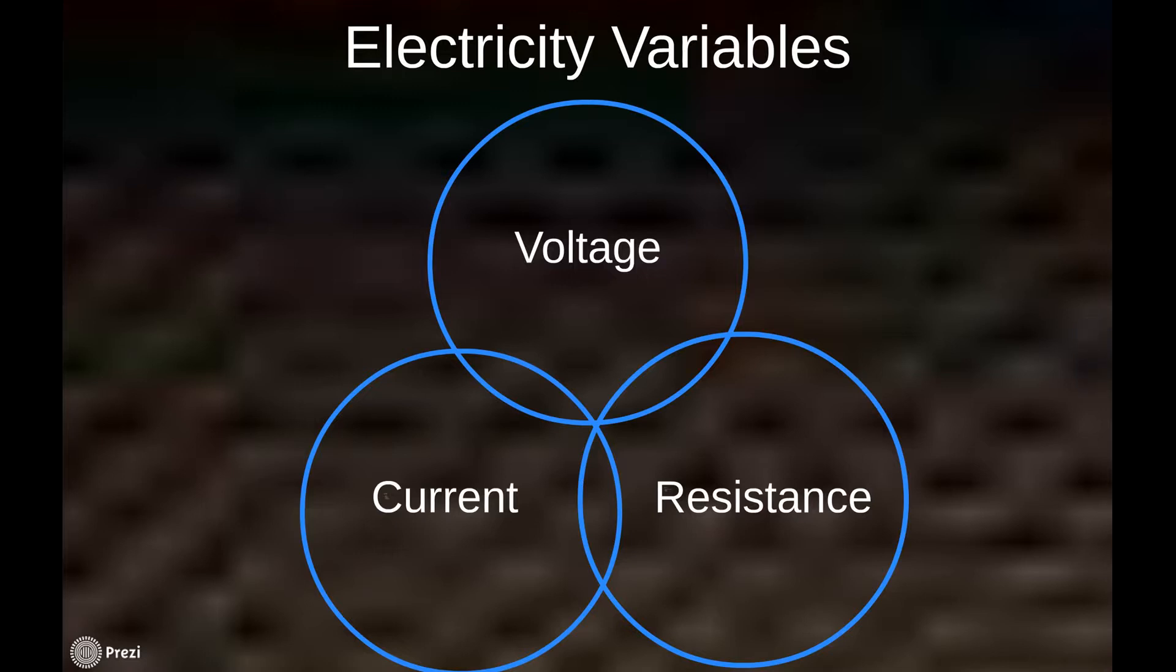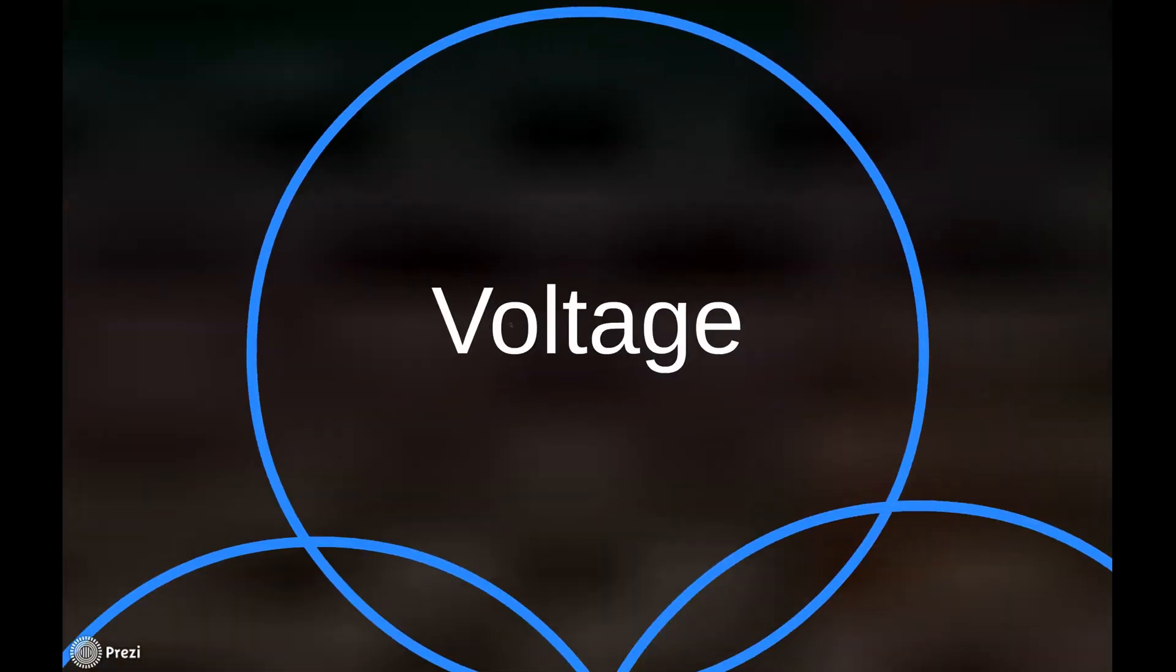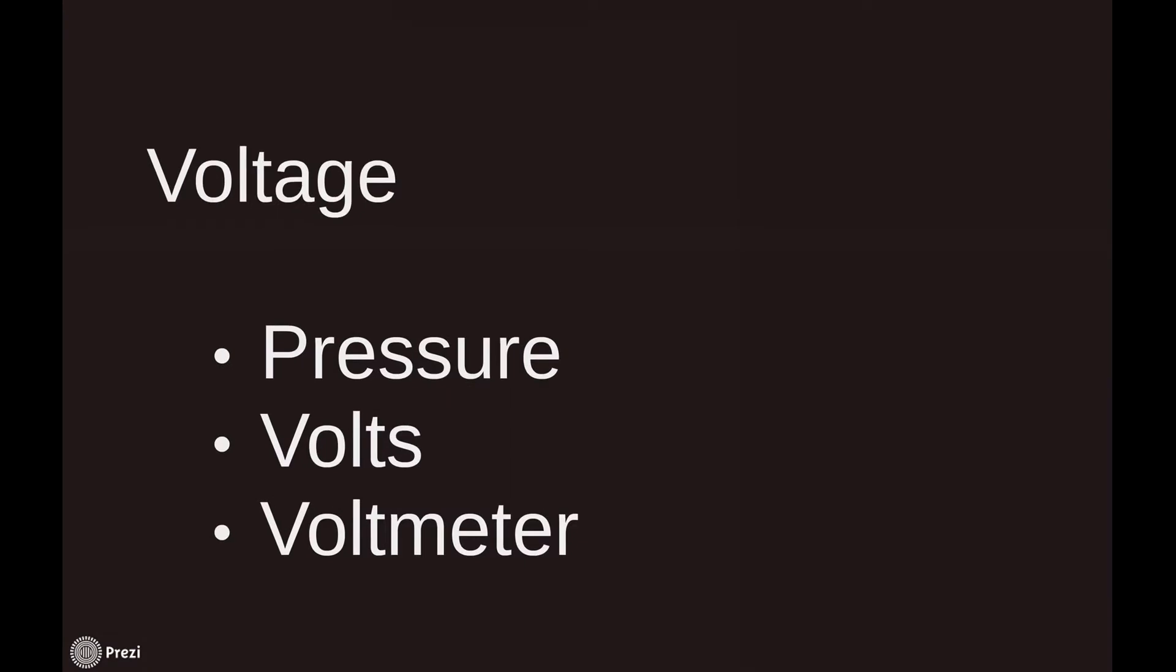First one we'll look at is voltage. There's a word that you need to remember when we talk about voltage, and that word is pressure. Voltage is pressure—that needs to resonate in your head. Voltage is electrical pressure, and that comes from some kind of an electrical pump or an electrical storage device. It could be a battery or it could be an alternator. We measure voltage in volts and we measure it with a voltmeter.